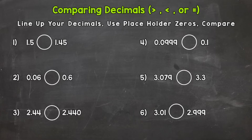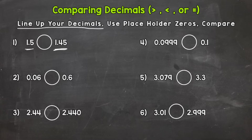So let's hop into number one. We have one and five tenths compared to one and forty-five hundredths. Now with decimals you cannot say one and forty-five hundredths is greater because it has more digits or it's a bigger number or something like that. You have to line up your decimals and compare the place values, because the size of a decimal doesn't necessarily mean its value is greater. So our first step is to line up your decimals. We write one and five tenths and then under it we write one and forty-five hundredths, and we line the decimals up — that lines up all of our places.